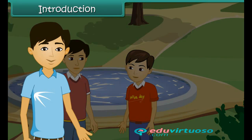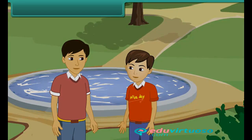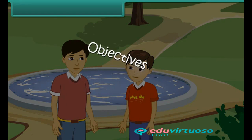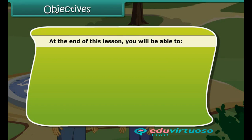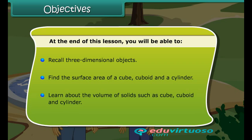Children, in this lesson on mensuration, we will learn to calculate the surface area and volume of some 3D objects. At the end of this lesson, you will be able to recall 3D objects, find the surface area of a cube, cuboid and a cylinder, and learn about the volume of solids such as cube, cuboid and cylinder.